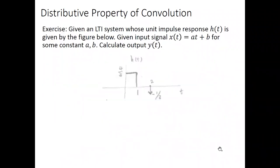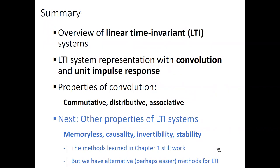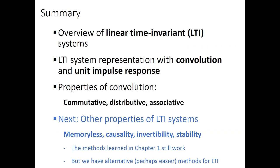Now let's come to the new content: other properties of LTI systems. We've learned six properties in chapter 1, and LTI systems already possess two of them — linearity and time invariance. The remaining four properties are: memoryless, causality, invertibility, and stability. To tell whether an LTI system satisfies these properties, we can use the same methods from chapter 1, but for LTI systems we also have an alternative method using the unit impulse response, which is often easier.